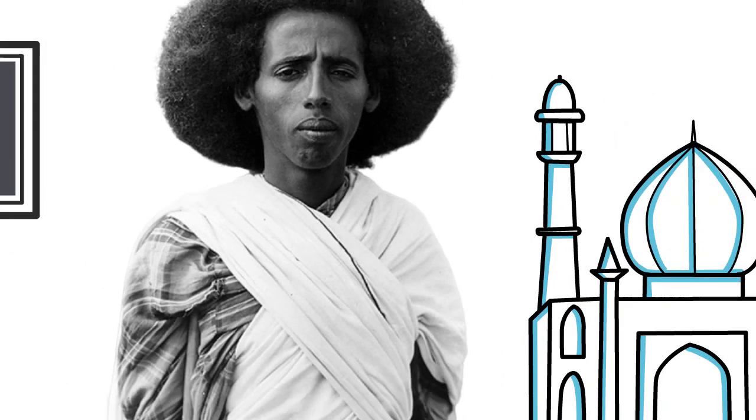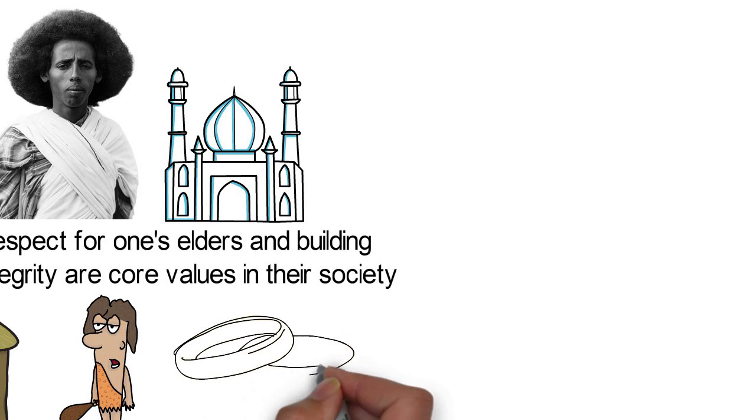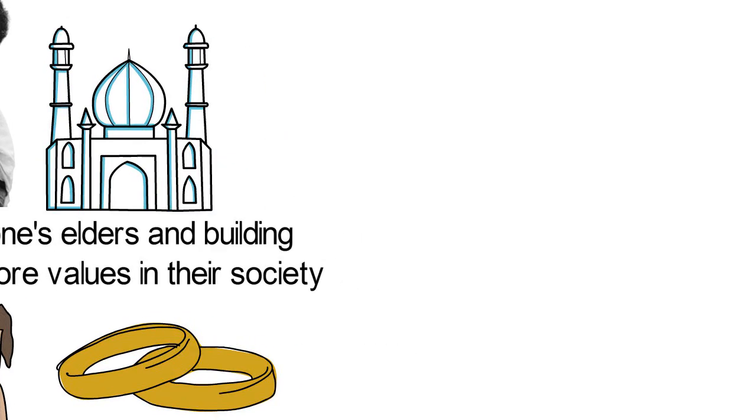Among Somali clans, marriage is often to another ethnic Somali from a different clan. This is practiced in order to strengthen alliances with other clans. Each man is allowed to marry up to four wives.